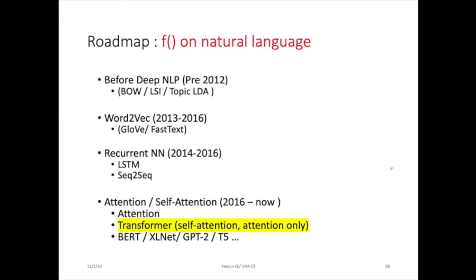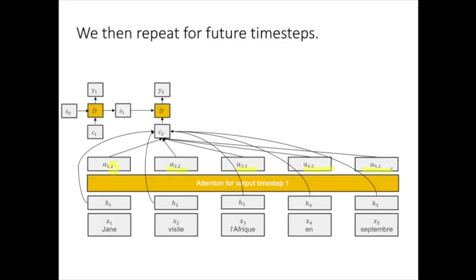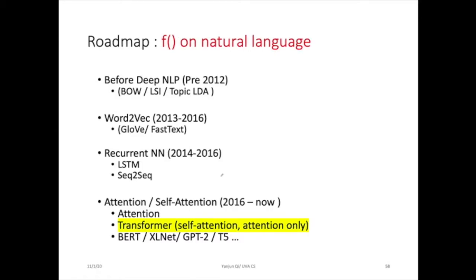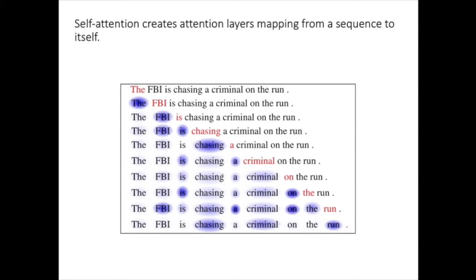In the initial sequence-to-sequence formulation for machine translation, the input space and output space are different — the input is an English sentence and the output might be a German sentence. But people extended this idea into a very interesting formulation called self-attention, which revolutionized many things in natural language processing.